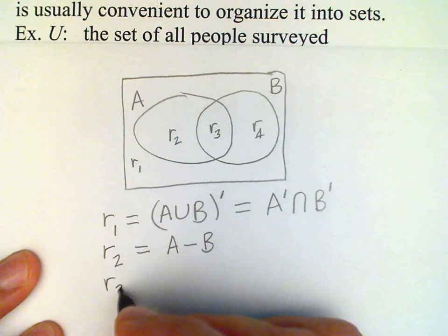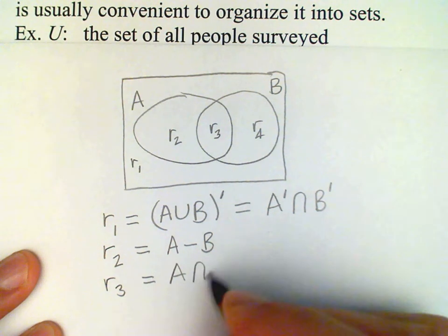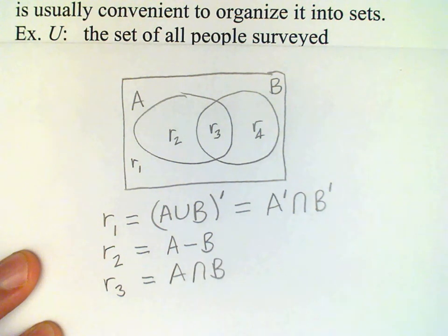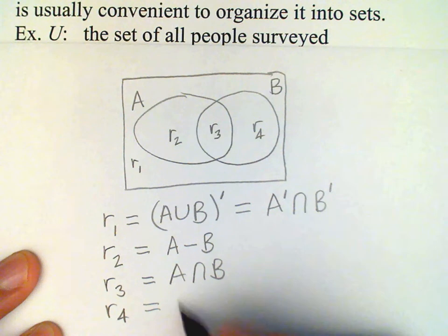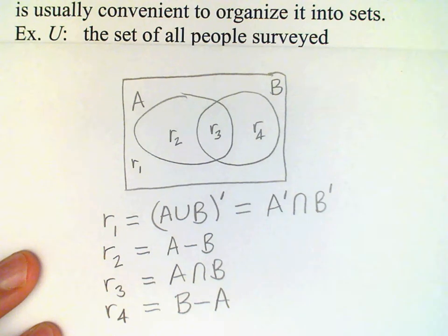r3, clearly that's the intersection of the two sets. And r4 is again easily represented using a set difference, but this time it's B minus A. In other words, that part of B which is not in A.